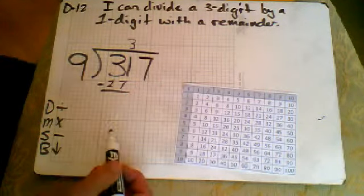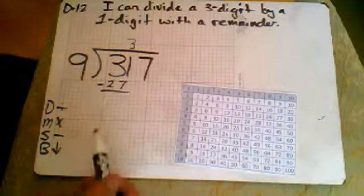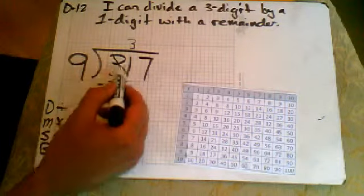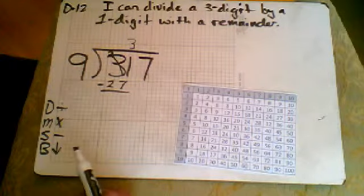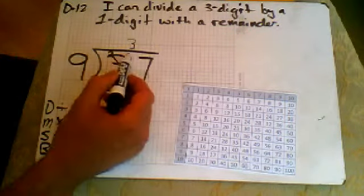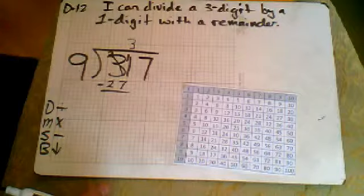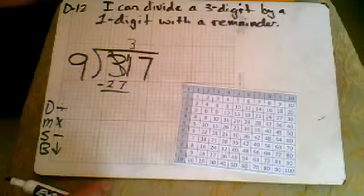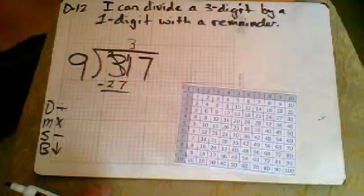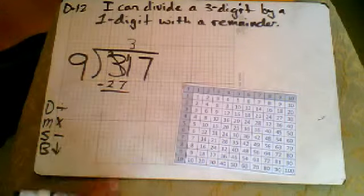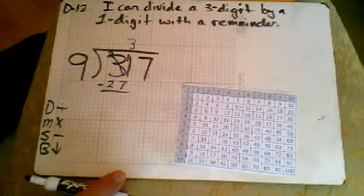Now we need to subtract. I cannot take 7 from 1, so I'm going to borrow from my tens column. That's going to decrease that to a 2, and it's going to bring that 10 over to the ones column, making that 11.